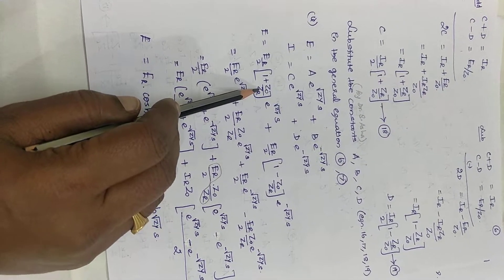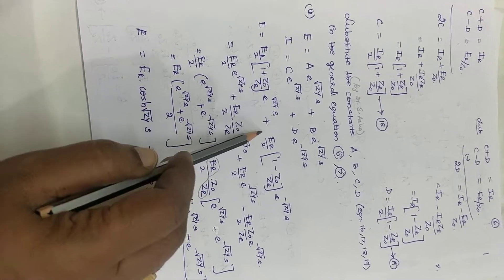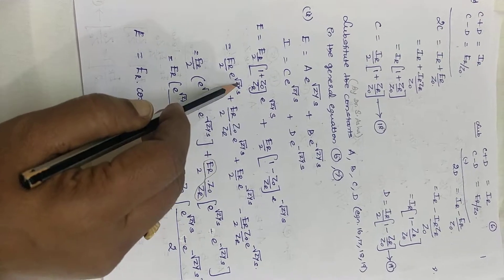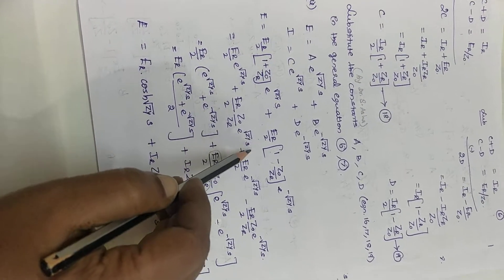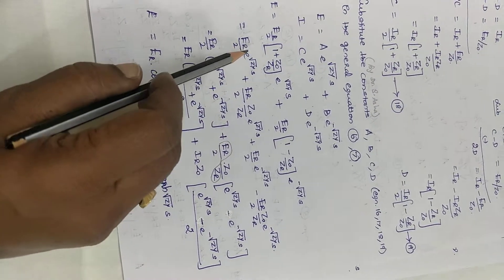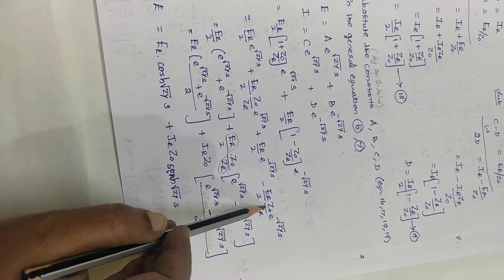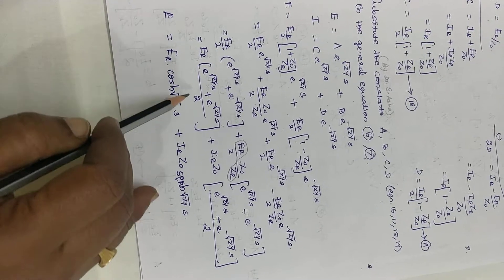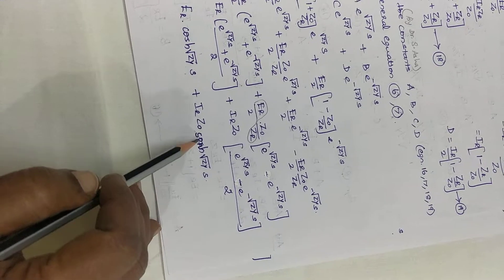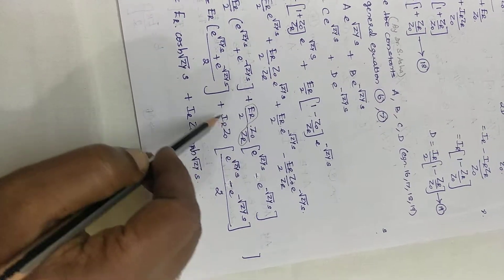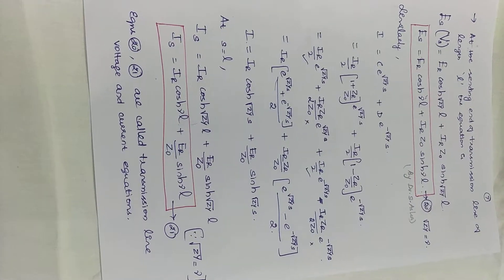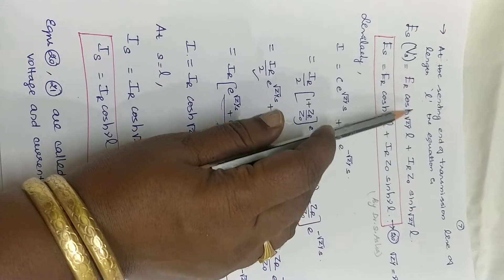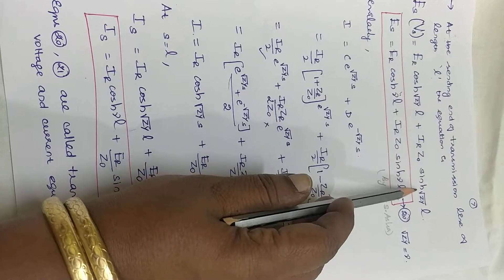Substituting A equals (ER/2)·(1 + Z0/ZR)·e^(√ZY·S) and B equals (ER/2)·(1 − Z0/ZR)·e^(-√ZY·S) into E, and expanding, similar terms are grouped. So E equals ER·(e^(√ZY·S) + e^(-√ZY·S))/2 plus IR·Z0·(e^(√ZY·S) − e^(-√ZY·S))/2, which is of the form ER·cosh(√ZY·S) plus IR·Z0·sinh(√ZY·S). At S equal to L, the equation becomes ES equals ER·cosh(√ZY·L) plus IR·Z0·sinh(√ZY·L).